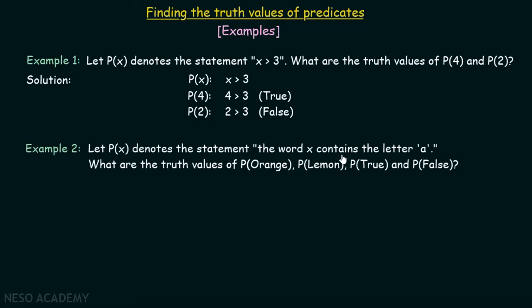Let's consider example number two. Let P(x) denote the statement 'the word x contains the letter a'. What are the truth values of P(orange), P(lemon), P(true), and P(false)? We need to identify these truth values if this statement is given to us.